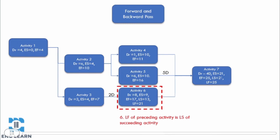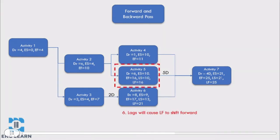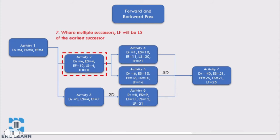So for activity 6, the late finish is day 21, which is the late start of activity 7. Any lags will cause the late finish of the activity to shift forward. So for activity 5, the latest that activity can finish before it delays activity 7 will be day 16, as there is a 5-day lag between them. If it finishes later than that, it will prevent activity 7 from starting on its late start date, day 21. When multiple successors exist, the late finish date will be the earliest late start of its successors. So for activity 2, since activity 5 needs to start on day 10 before it begins to delay the project, activity 2 will need to finish by day 10 to prevent delaying the project.